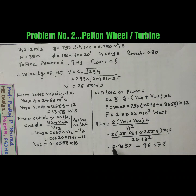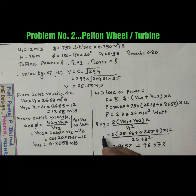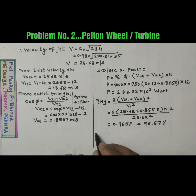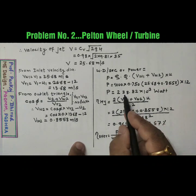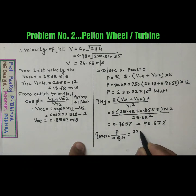Now calculate overall efficiency. So overall efficiency means P upon W Q into H. So power that is 238.82 into 10 raised to 3.